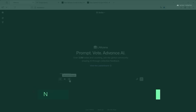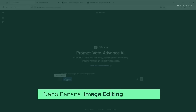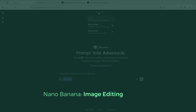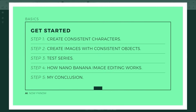Since many of you are probably most curious about how to create consistent characters, let's start right there. Next up we'll explore how to combine different objects into one coherent image, and of course no tutorial would be complete without a test series. You'll see 23 individual images, each one different, yet all connected. Thanks to Nano Banana's unique image editing feature, they form a single visual storyline.